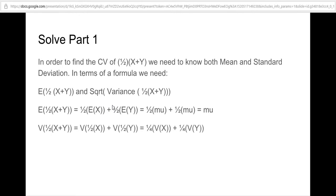Now let's look at the variance. For the variance of (1/2)(x + y), we distribute the one-half. There's a subtle difference here: when a factor modifies a random variable inside the variance, you pull it out and square it. So Var((1/2)x) + Var((1/2)y) becomes one-fourth times Var(x) plus one-fourth times Var(y). The real question is: what are Var(x) and Var(y)?